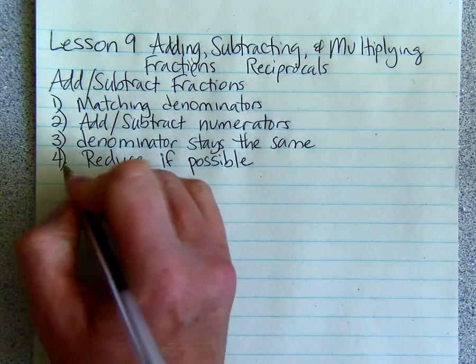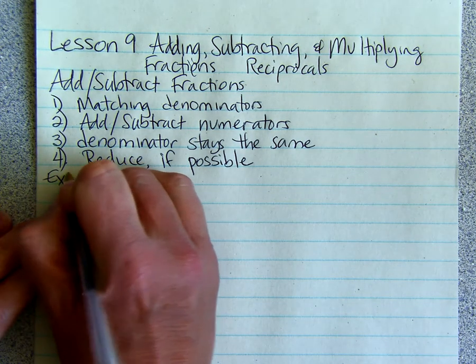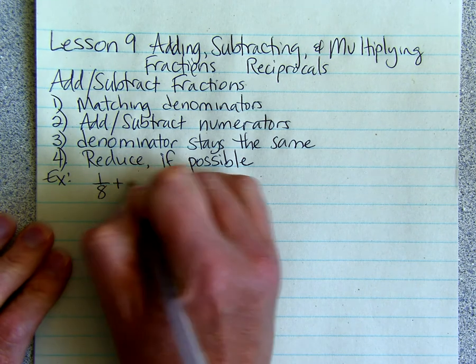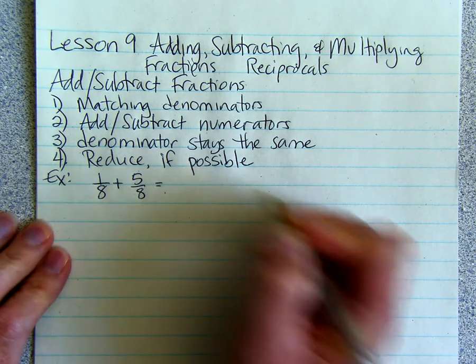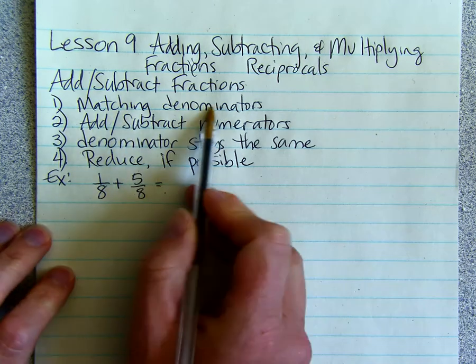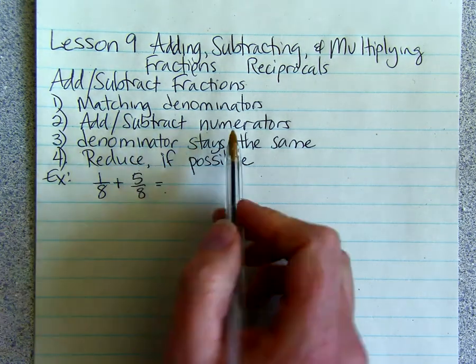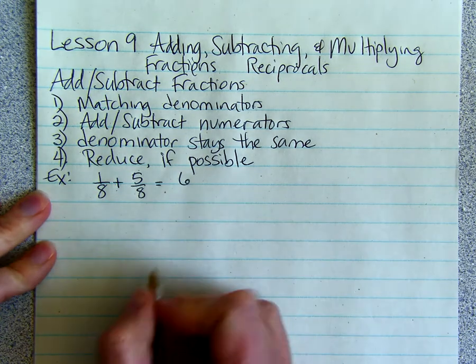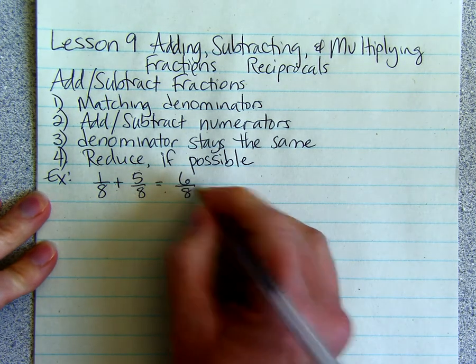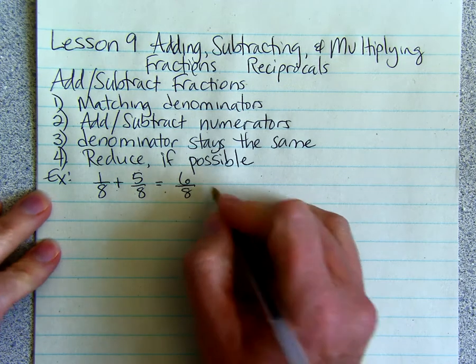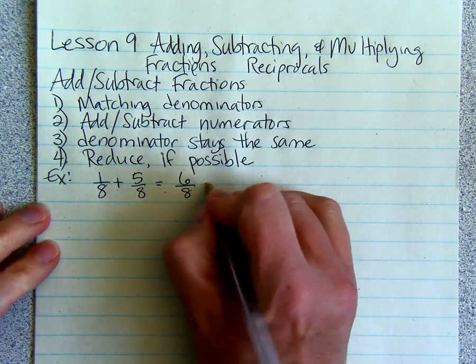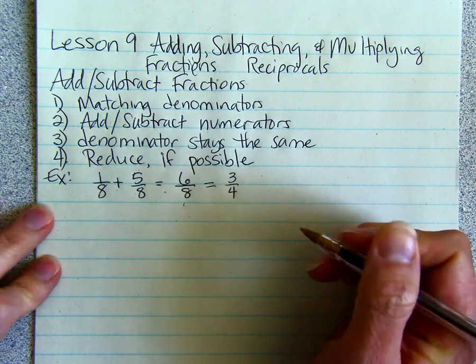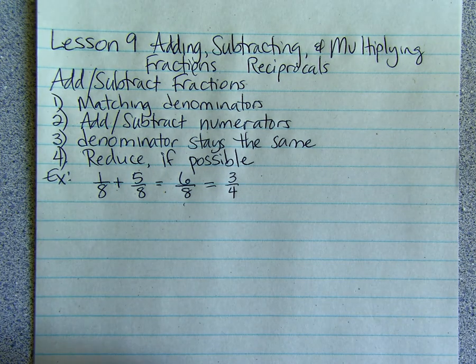So here's an example. If we wanted to add 1 eighth and 5 eighths, we would make sure our denominators are matching. They're both eighths. We add or subtract the numerators. Since we're adding, we'll do 1 plus 5. The denominator stays the same, so it's 6 eighths. Then we reduce if possible. We can divide both the 6 and the 8 by 2 to get 3 fourths, and the answer would be 3 fourths.